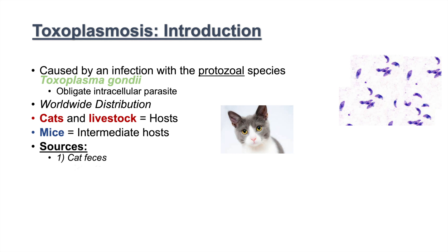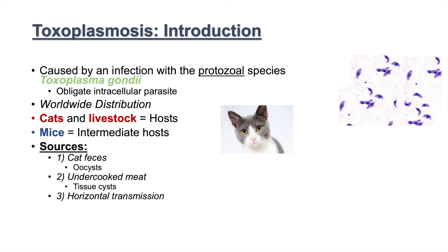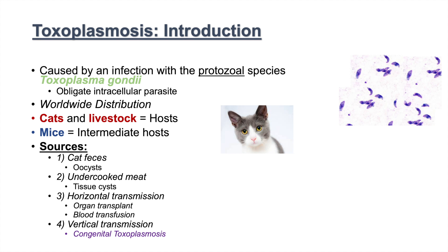There are several different sources by which a person can be infected with this protozoa. One is through cat feces, where the person gets exposed to Toxoplasma oocysts. The second source is through undercooked meat, involving tissue cysts. There is also horizontal transmission, which can include organ transplant or blood transfusion from an infected person. The fourth source is vertical transmission from mother to child, leading to congenital toxoplasmosis. The first three sources lead to acquired toxoplasmosis, and the fourth leads to congenital toxoplasmosis.